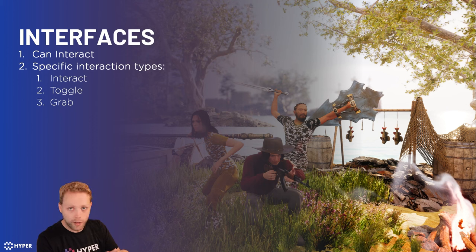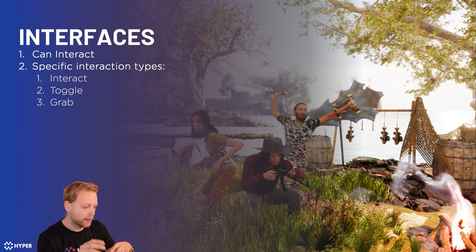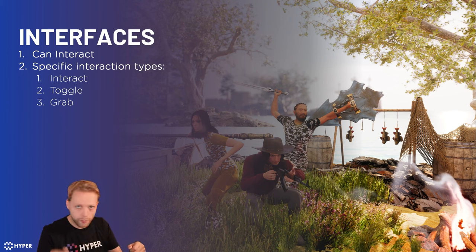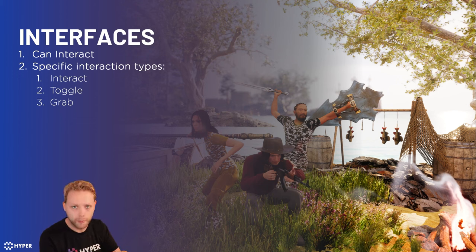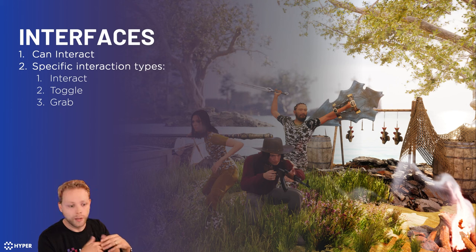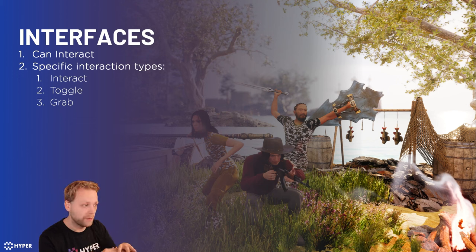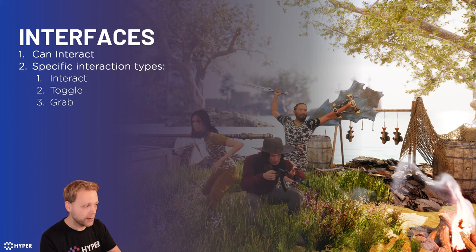The third one is a grab interface. The grab interaction type involves holding the mouse button and having an immersive feeling to pull a chain or rotate a wheel or something like that — it's something extraordinary. Of course, it's not limited to only these interaction types. I encourage you to build upon my system — I think this gives a perfect base for any interaction system.